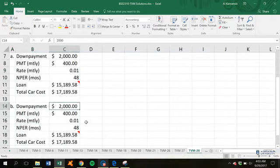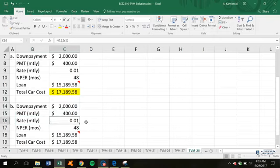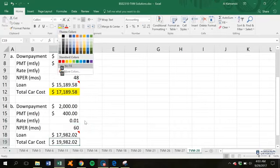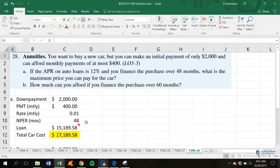Well, we still have the same down payment, we still have the same $400 maximum monthly payment, we still have a rate of 1% per month, but now we're just going to change our number of periods to 60, and so now you can get a slightly nicer car at $19,982 instead of the $17,189 you could have gotten previous.